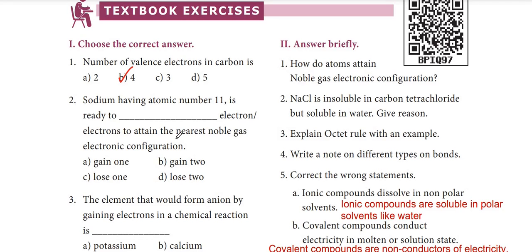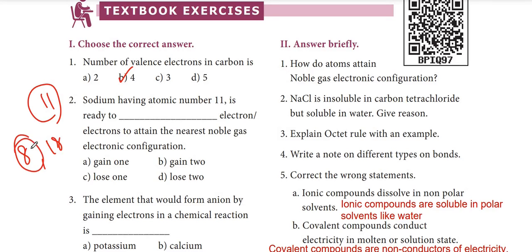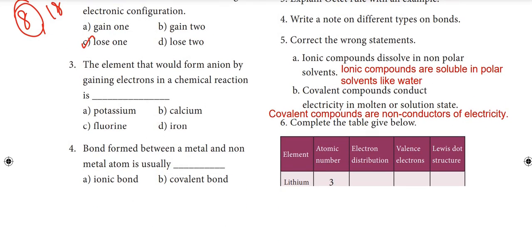Second question: sodium having atomic number 11 is ready to lose how many electrons to attain the nearest noble gas configuration? Sodium's electronic configuration with atomic number 11 — the stable noble gas configuration is 8 or 18. The nearest is 8, so it has to lose 1 electron. The outermost shell has 1 electron, so option C.